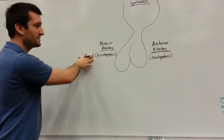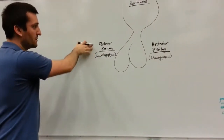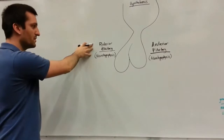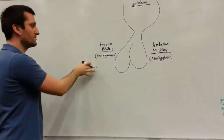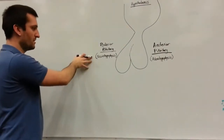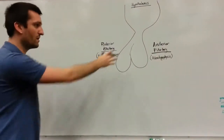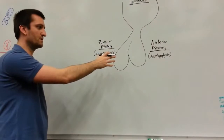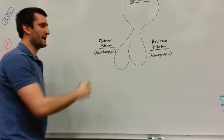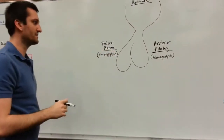Next, we have some different names. The posterior pituitary is also synonymously called the neurohypophysis, while the anterior pituitary is called the adenohypophysis.